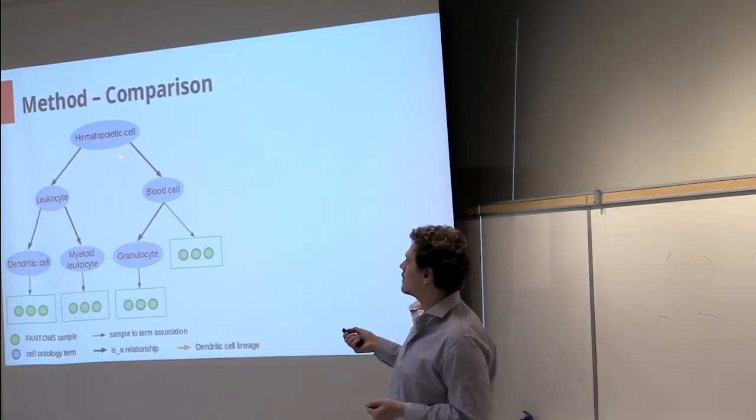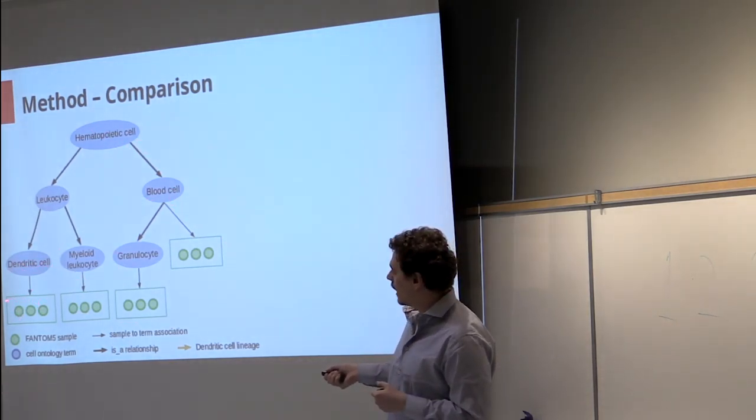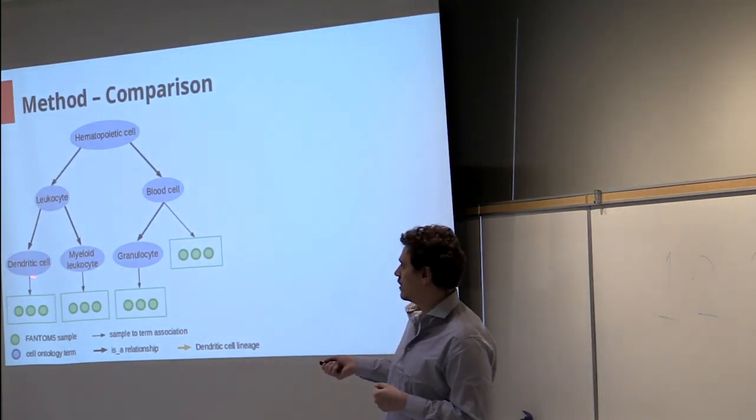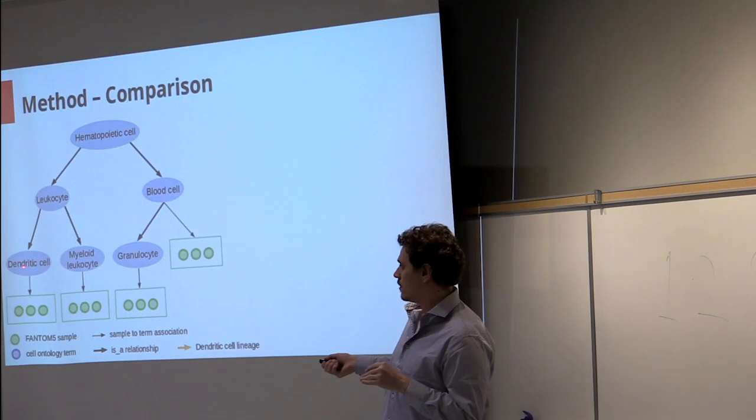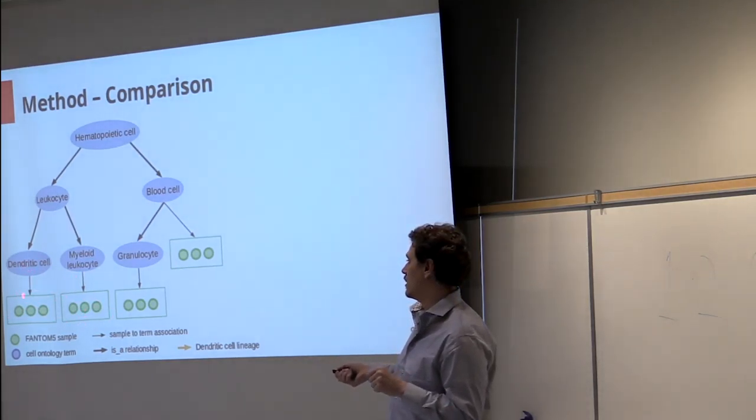Such that leukocyte is a hematopoietic cell, myeloid cell is also a hematopoietic cell, and down the tree you have an association between cell types, cell ontology terms from the cell ontology, and FANTOM5 samples that are represented here in green.